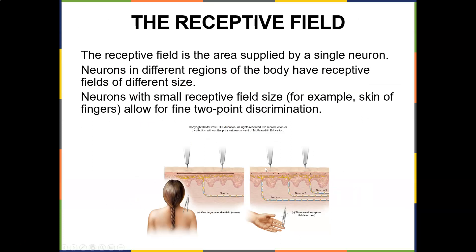The receptive field is the area supplied by a single neuron. If you try to feel sensation on your fingertips, you can delineate between two sharp objects. But on your back, you'd likely feel just one. Neurons in different regions have receptive fields of different sizes. Neurons with small receptive fields, like the skin of the fingers, allow for fine two-point discrimination. The brain dedicates a large area to the hand but much less to the back, which explains this.